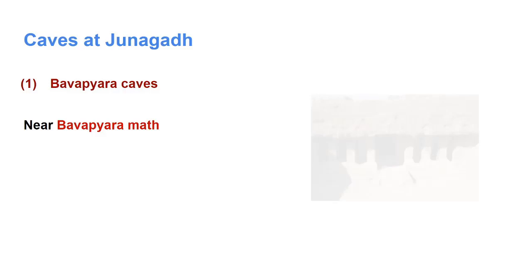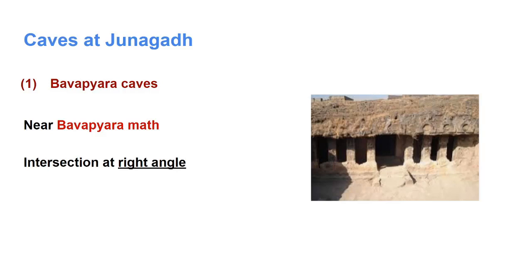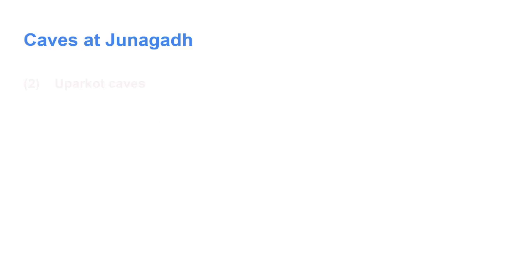They are in three layers intersecting each other at right angles. There are a total of 16 caves — four are in the first line, seven in the second line, and five in the third line. Each layer intersects with the others at right angles. Possibly they were carved during the first and second century. These Baba Piara caves contain artworks of both Buddhism and Jainism.